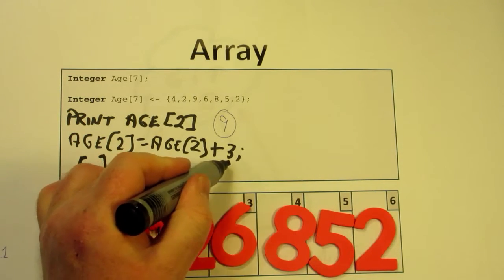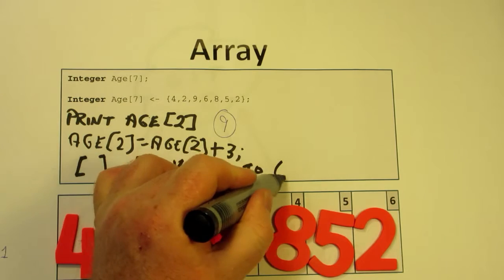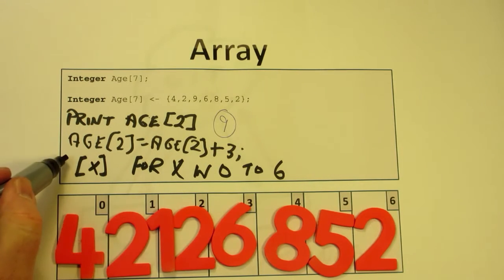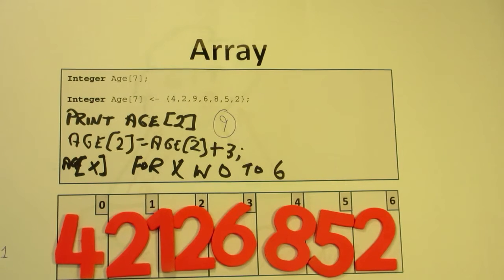...x in zero to six, I can say things like print Age[x]. I can say add one to Age[x]. I can manipulate the array however I want once I've decided that the variables are in this array collection. So an array is a really powerful way to manipulate values and variables.